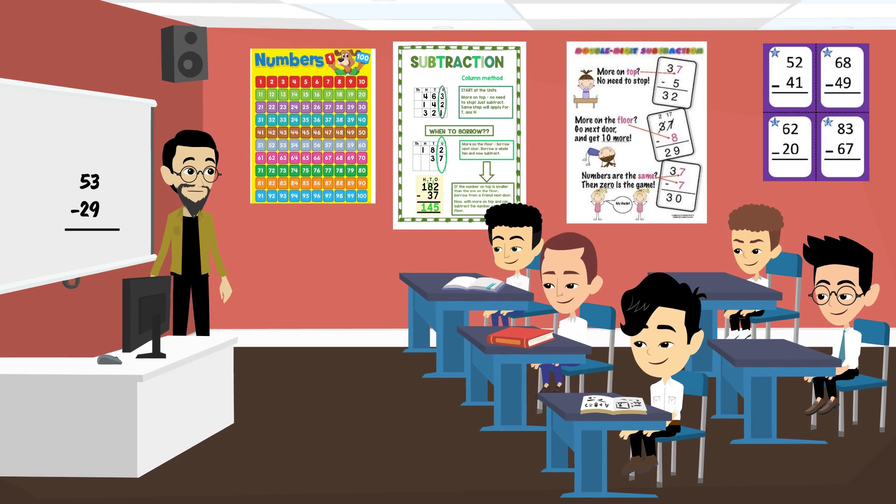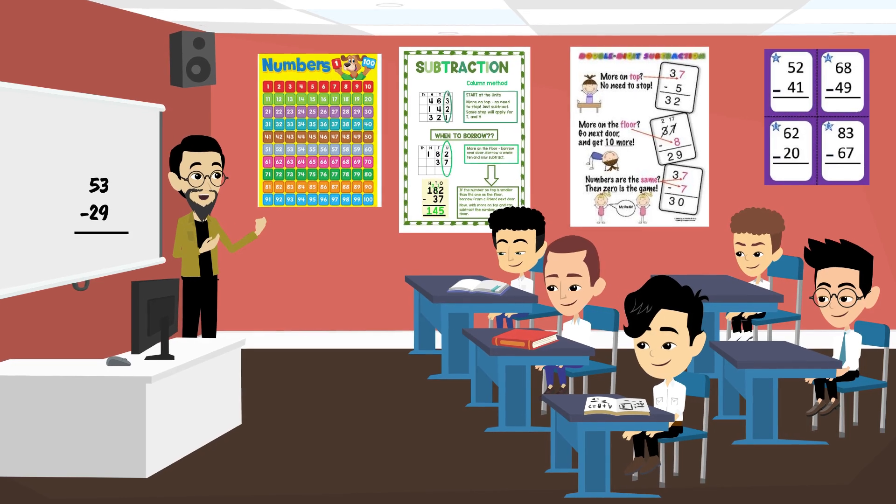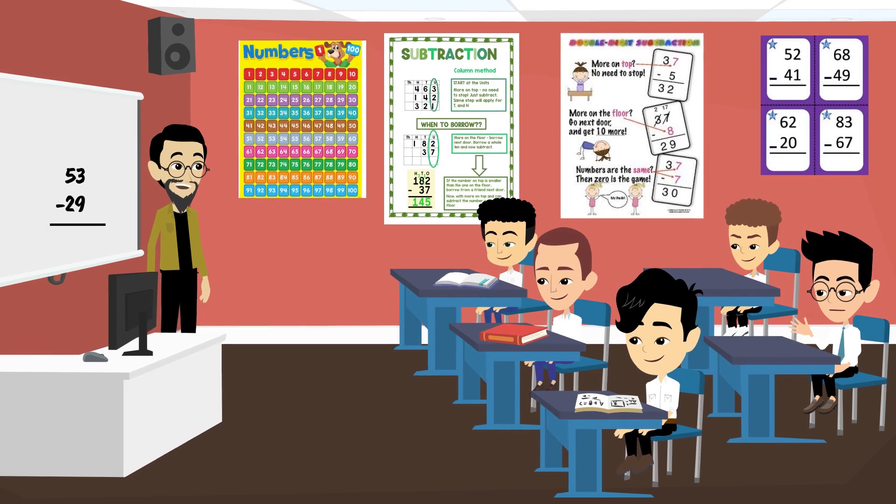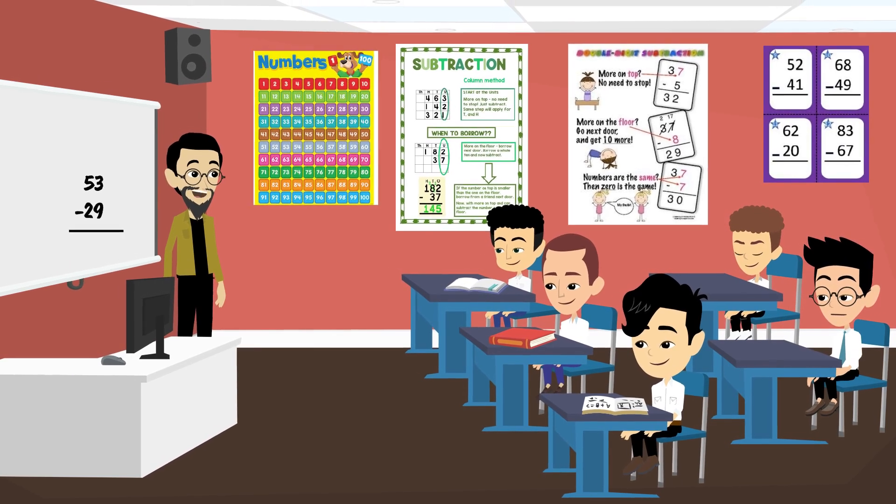First, let's look at the one's place. We have 3 minus 9. Can we do that? No, 3 is smaller than 9. Exactly.